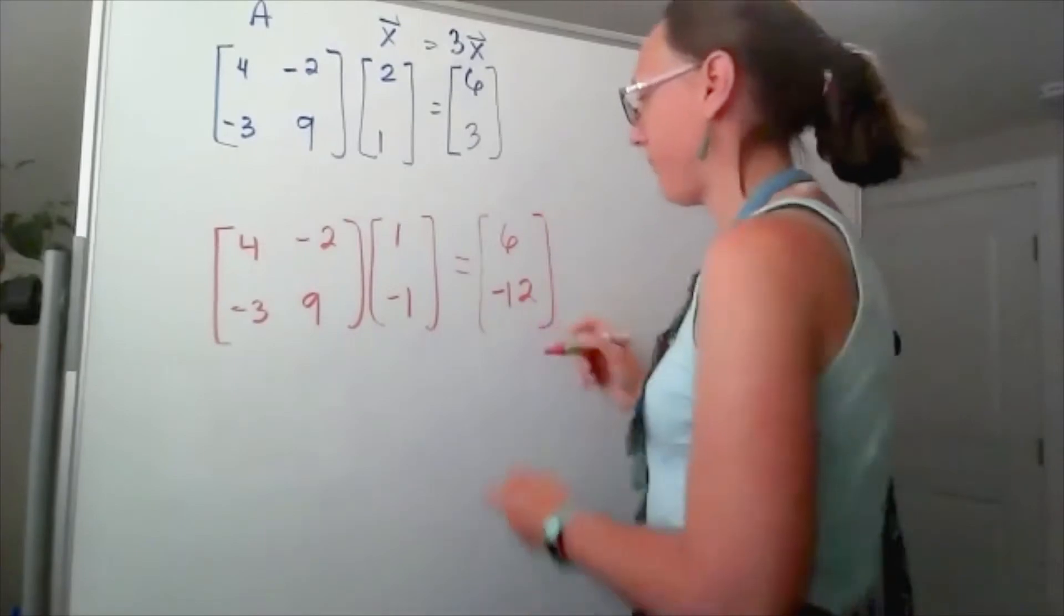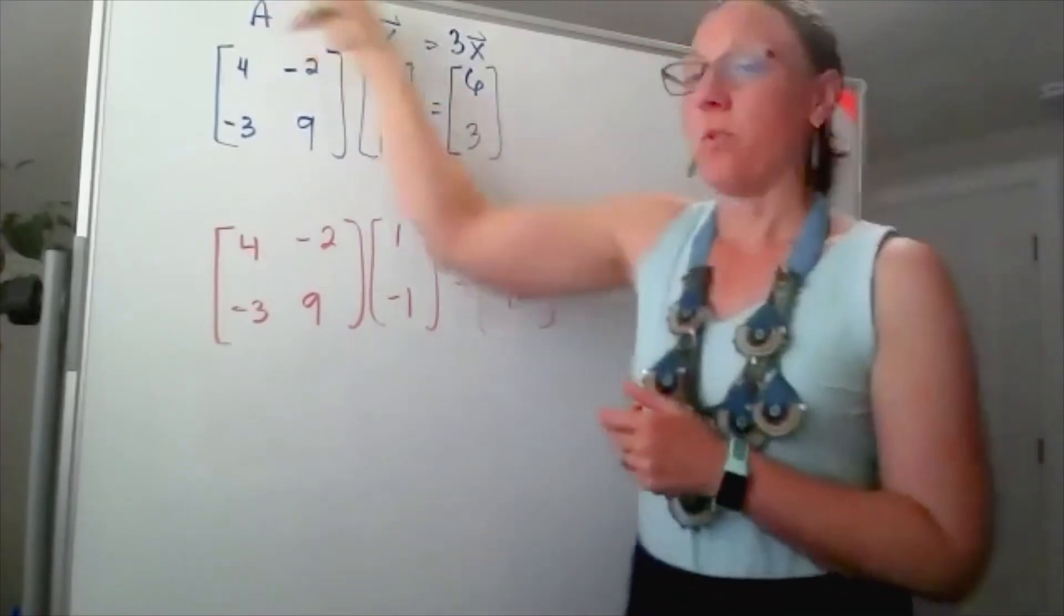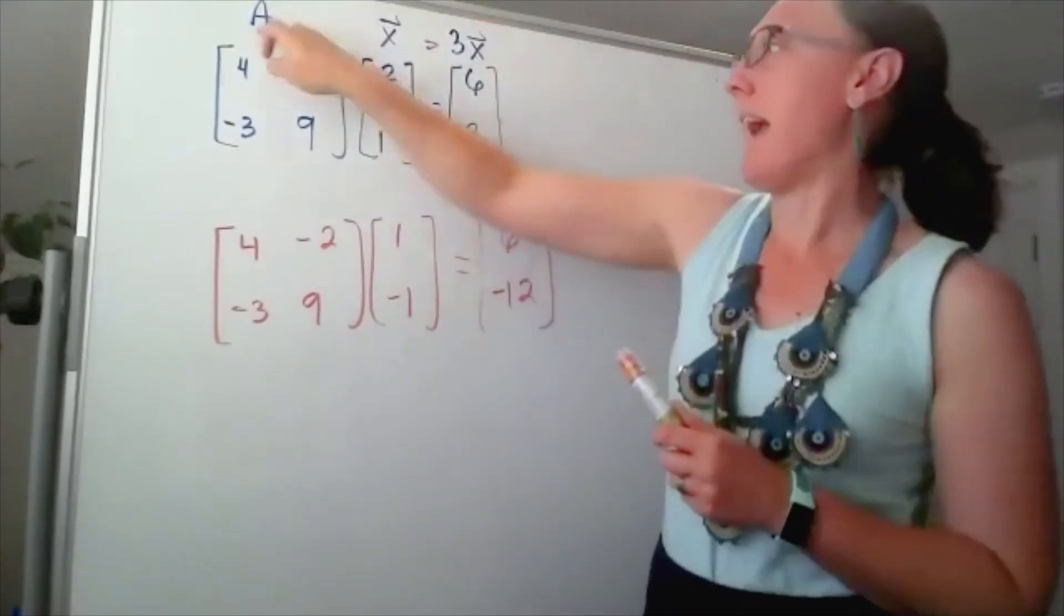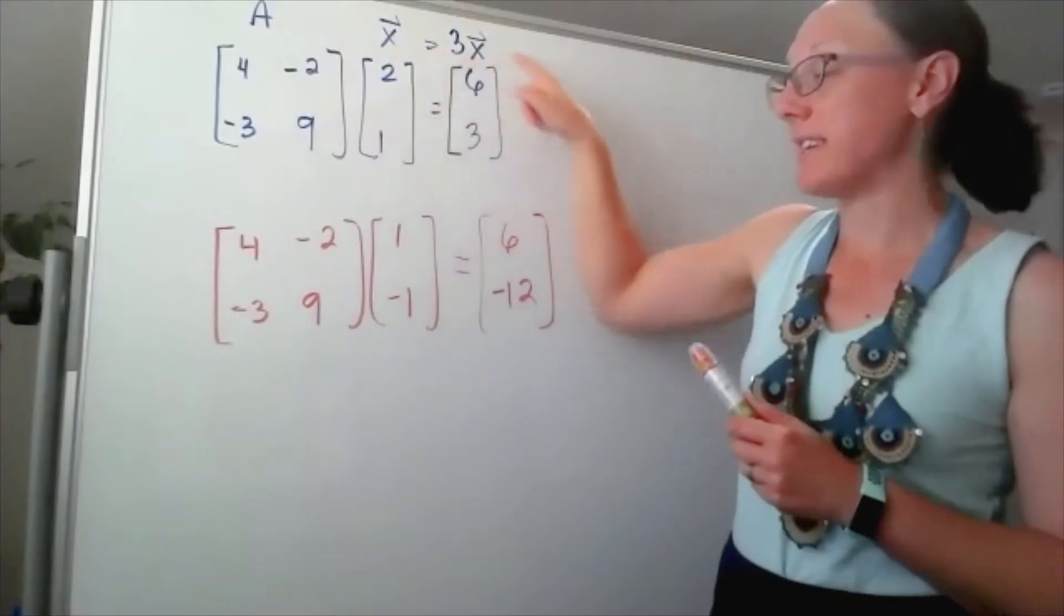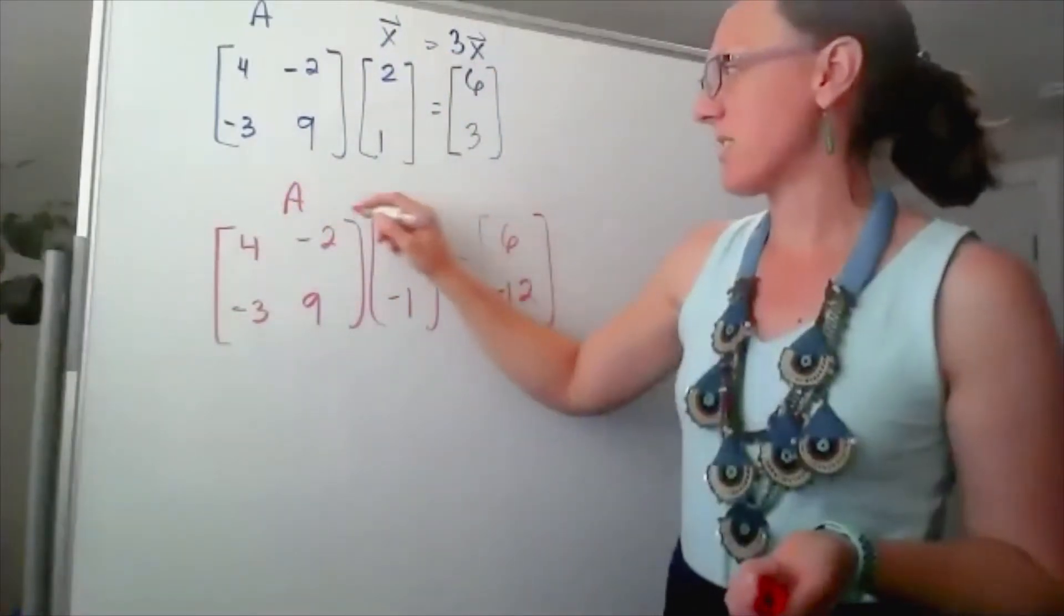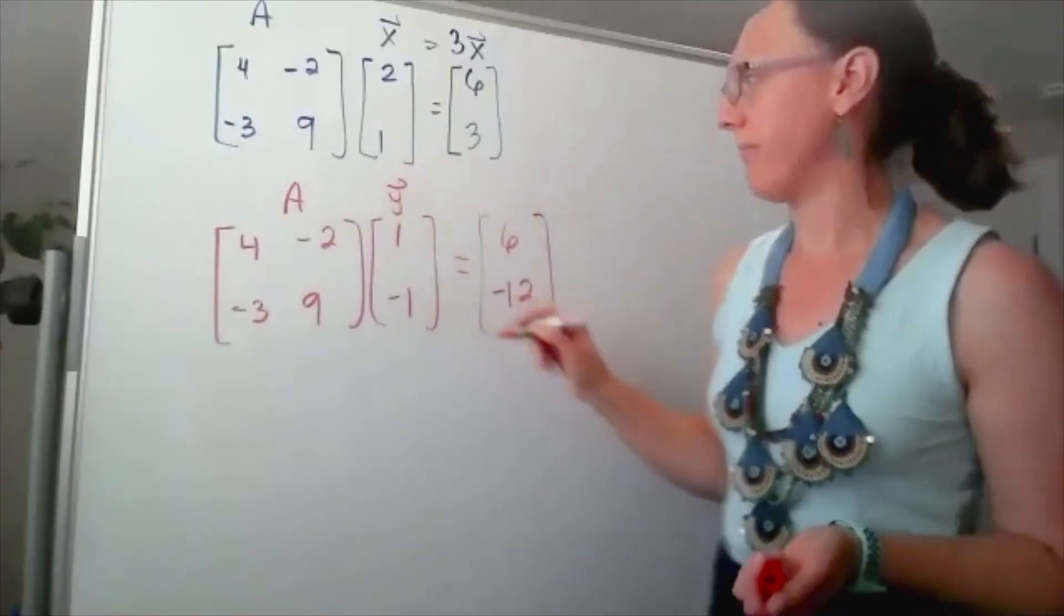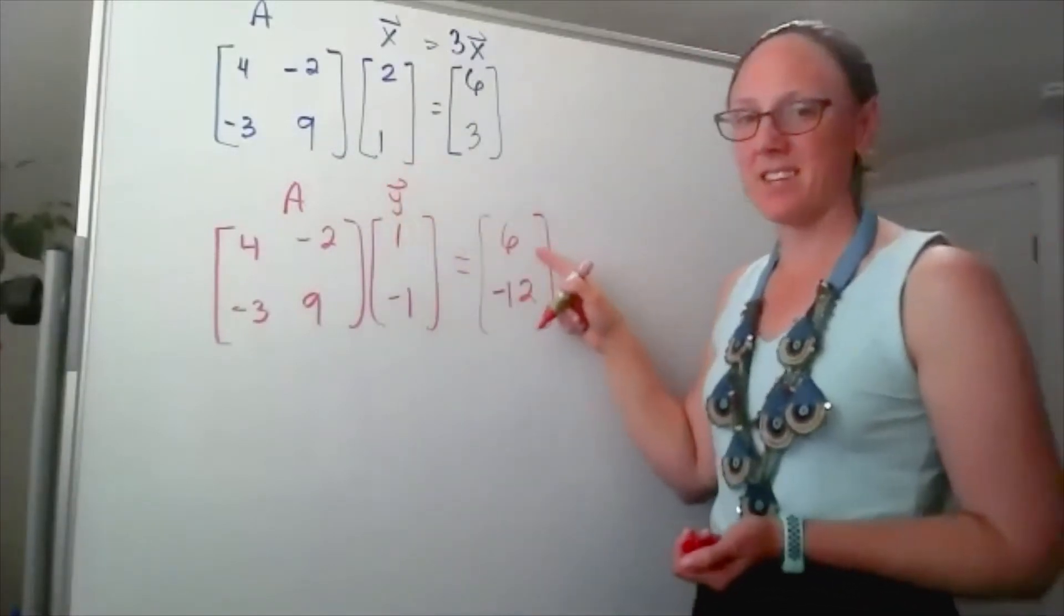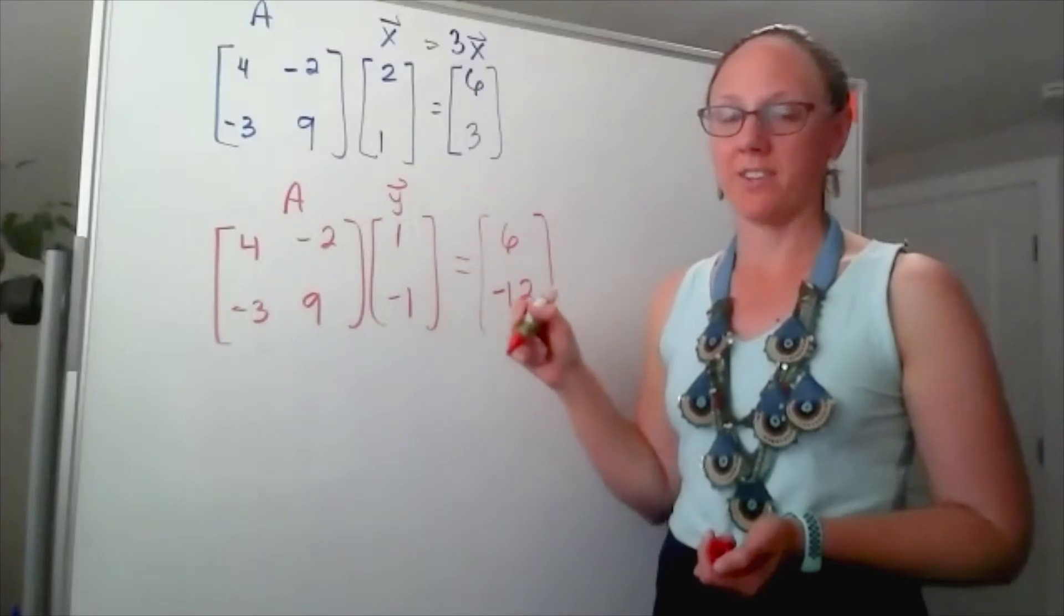So if that top equation worked out to be A times x equals three times the vector I put in, I've got A times some random vector - this is not a multiple of what I started with.